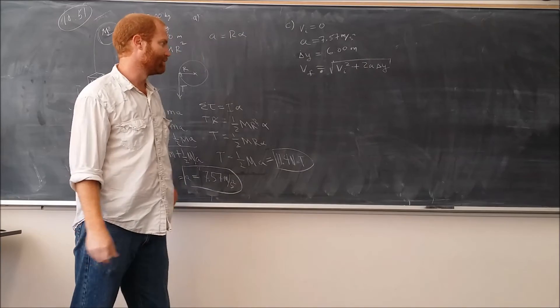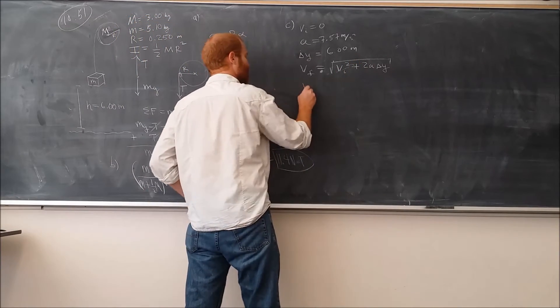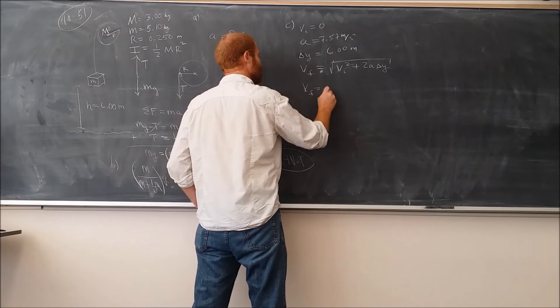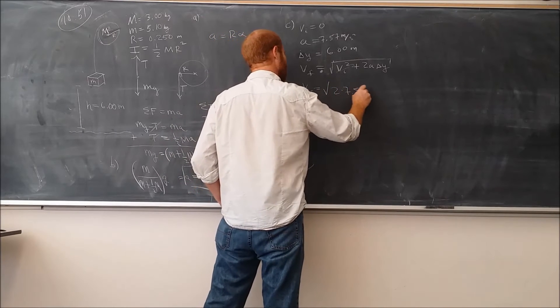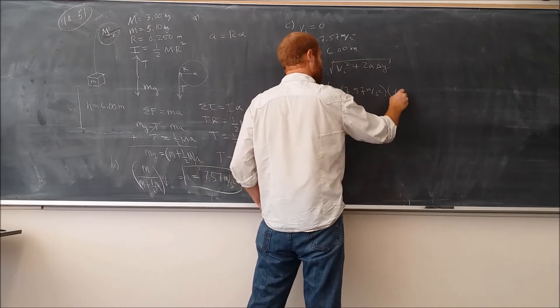A kinematic equation where I take the square root to the left side. This part is zero. So we get that VF is equal to the square root of 2 times our acceleration times the change in y, which is 6.